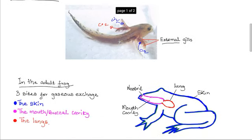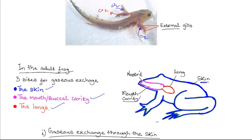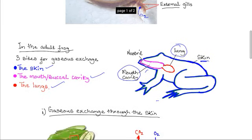Their membranes are very thin and they are highly vascularized to establish and maintain a steep diffusion gradient. In the adult frog that lives both in water and on dry land, there are three sites for gas exchange. These are the skin, the mouth cavity, and the lungs. In this diagram here you can see the skin, the mouth cavity, and the lungs — the three sites for gas exchange used depending on the location of the organism, whether it is in water or it is on land.